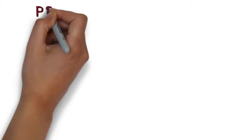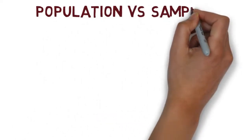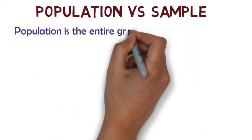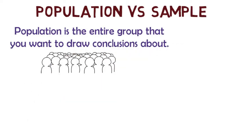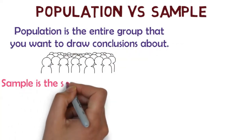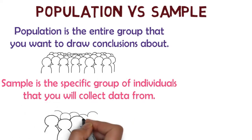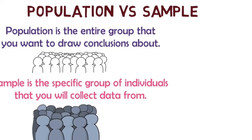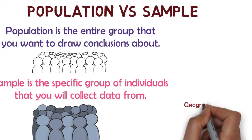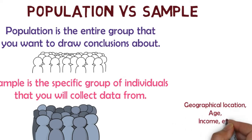Firstly, we need to understand the difference between a population and a sample. The population is the entire group that you want to draw conclusions about, while the sample is the specific group of individuals that you will collect data from in a research. The population can be defined in terms of geographical location, age, income and many other characteristics.